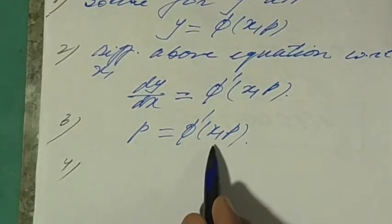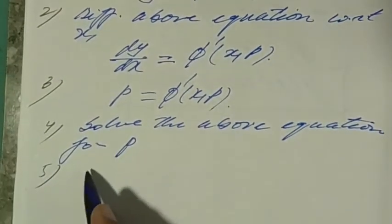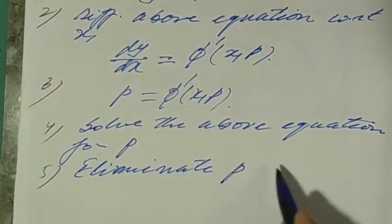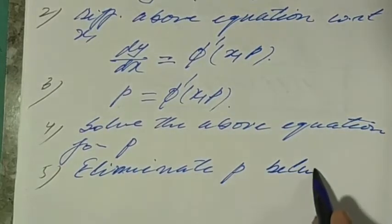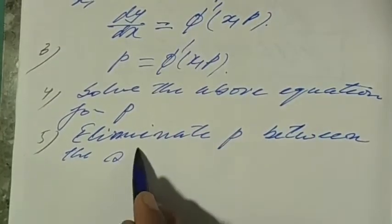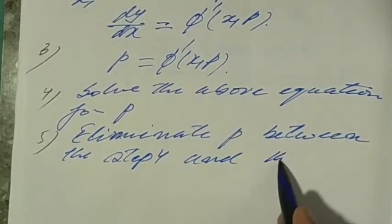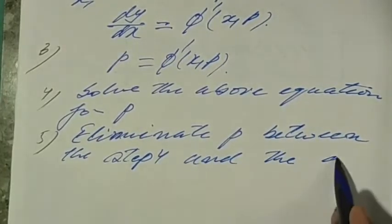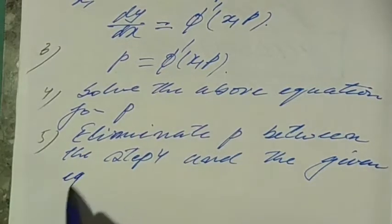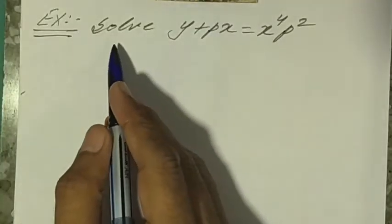Step 4: solve this equation for p. Final step: eliminate p between the solution from step 4 and the given equation. Let us take an example: solve y + px = x⁴p².